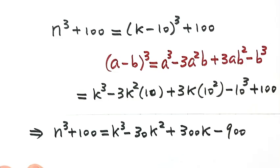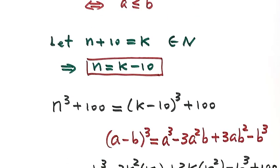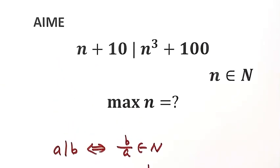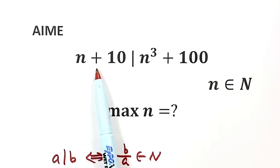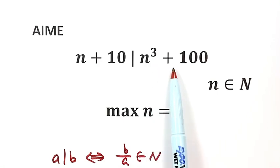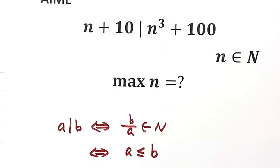So now let's see. Next step, we are going to use this condition: n plus 10 divides n to the third plus 100.